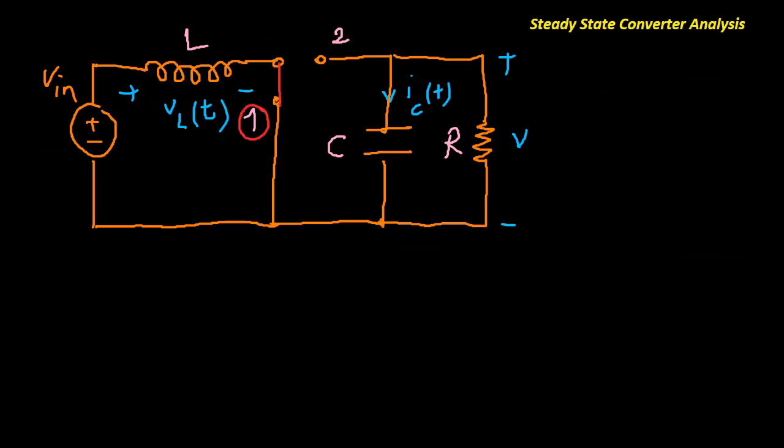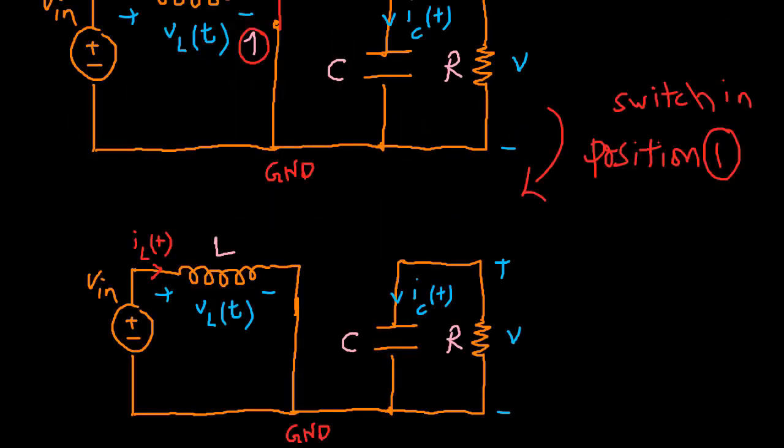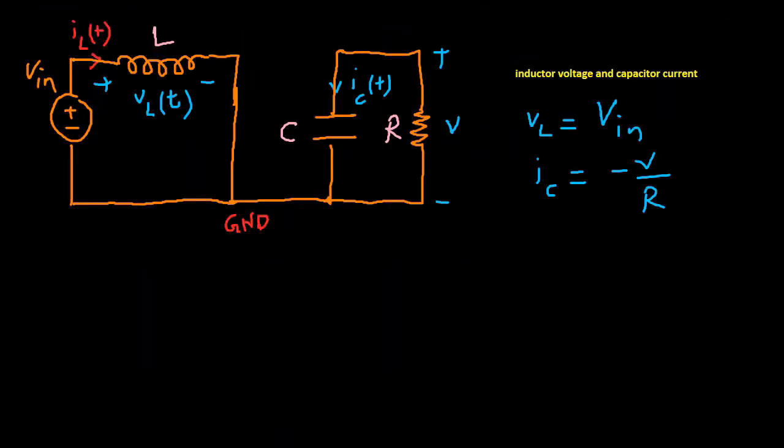With the switch in position 1, the right-hand side of the inductor is connected to ground, resulting in this network. These are the inductor voltage and capacitor current for this sub-interval.